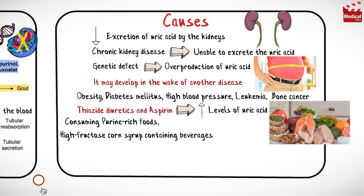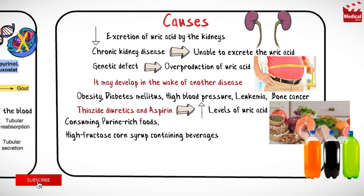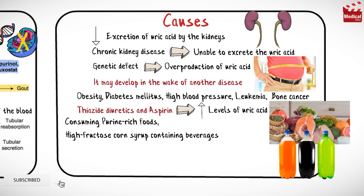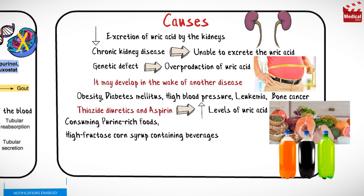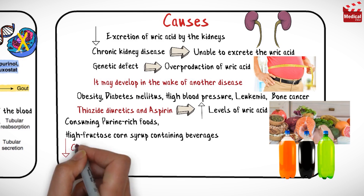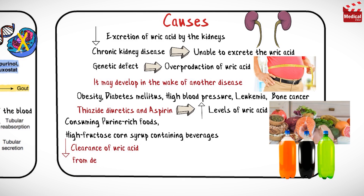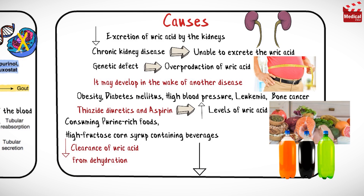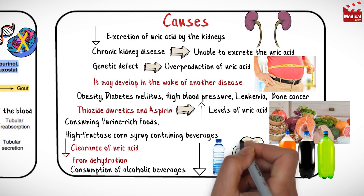High fructose corn syrup-containing beverages could also contribute to the formation of uric acid by increasing purine synthesis. Decreased clearance of uric acid can result from dehydration from not drinking enough water, or from consumption of alcoholic beverages.